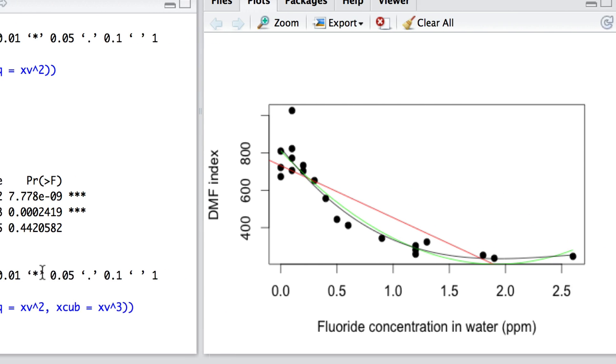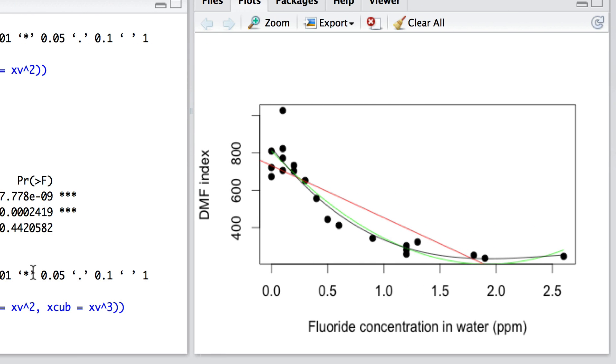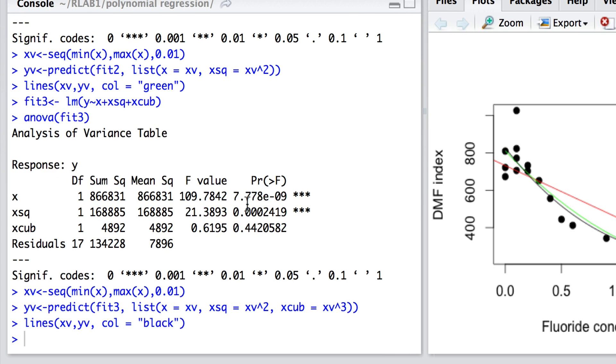Well, we can see that of course because it's a cubic model we do have curvature, but I hope you can see that the fit of the cubic model and the fit of the squared model seem really very, very similar, and part of the similarity arises from the fact that that cubic term really doesn't explain much of the additional variance above and beyond that explained by x and x-squared.